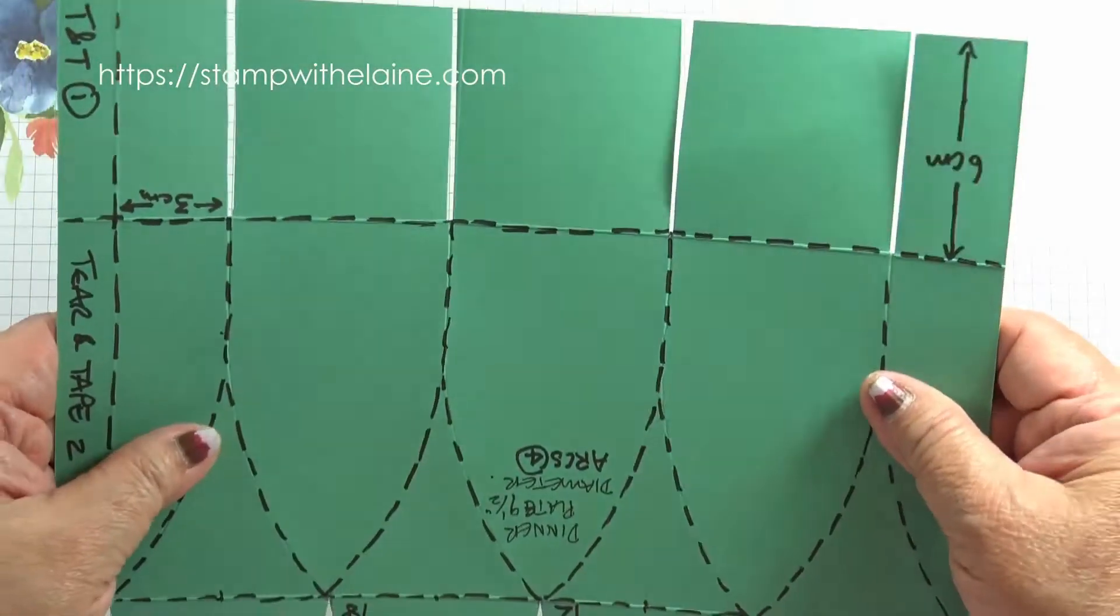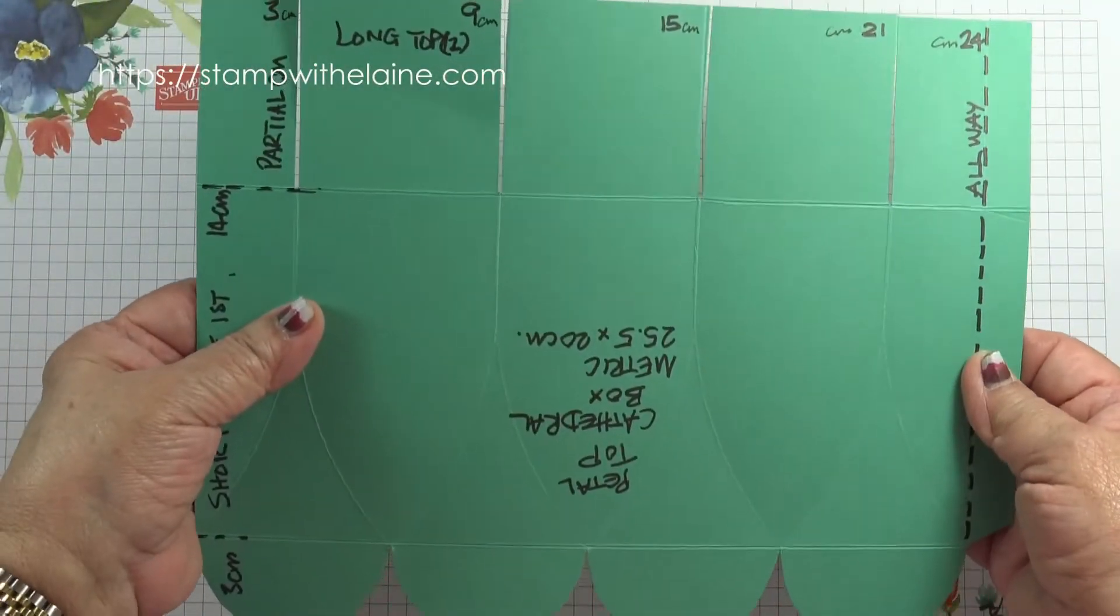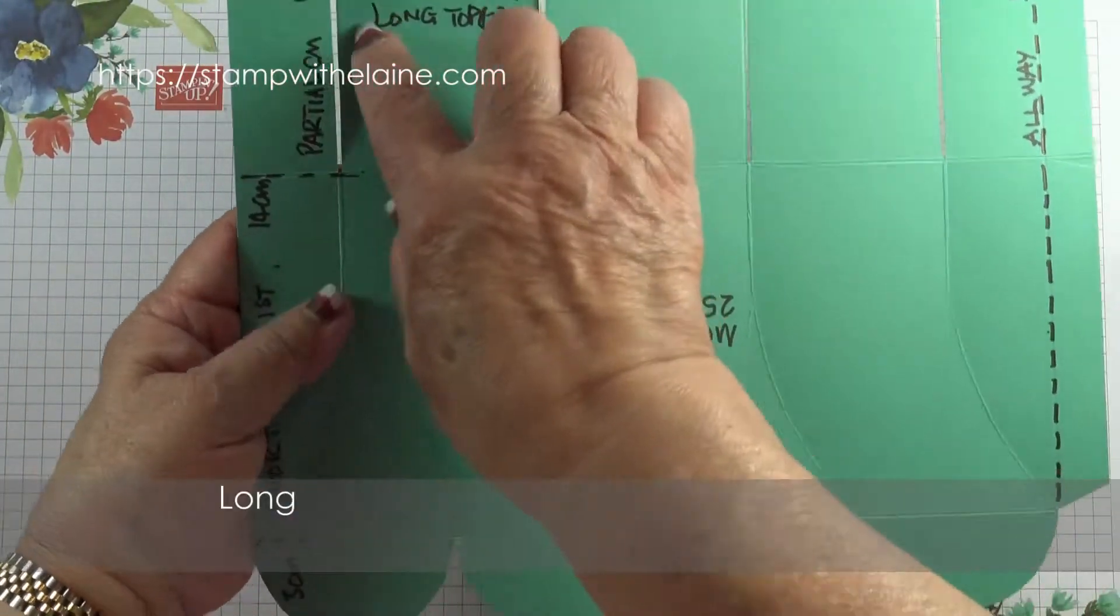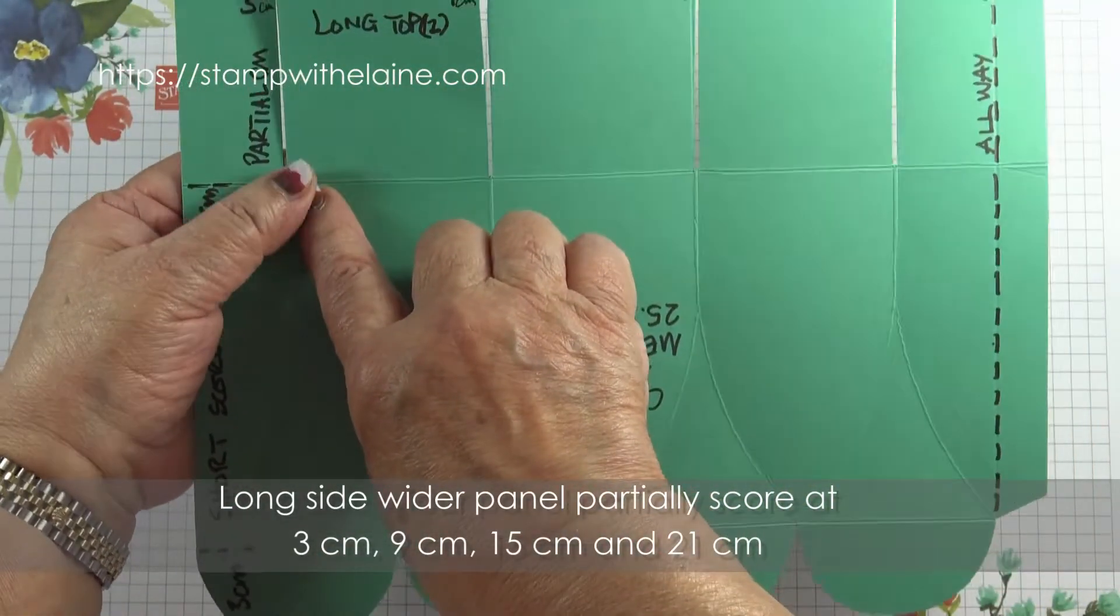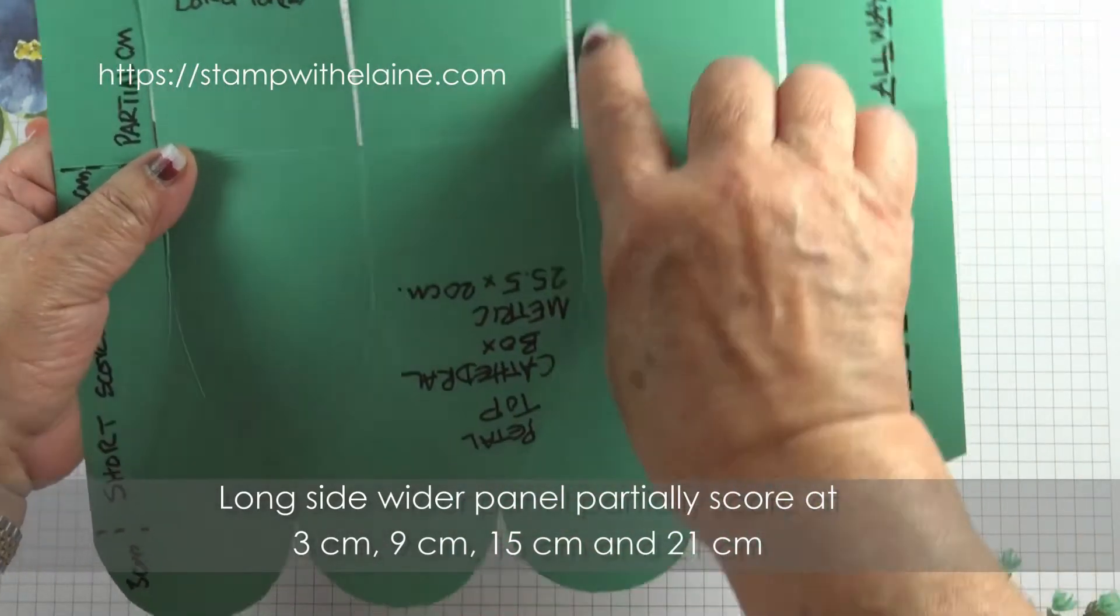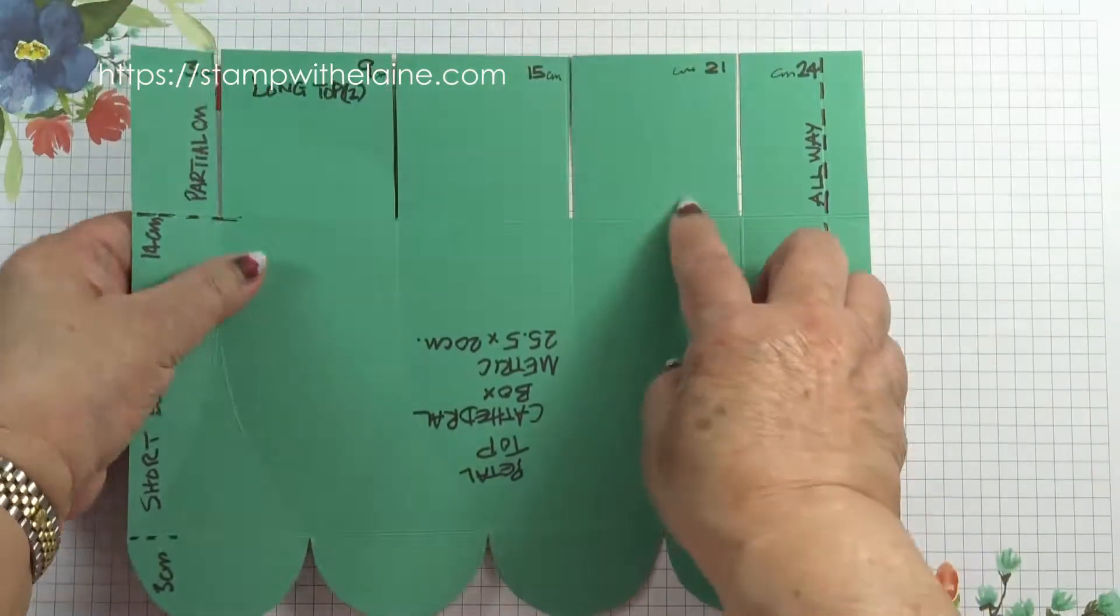Then orient your cardstock so that the long side is at the top, and your first score line will be partially scored to this score line here. And it's at three centimeters, nine centimeters, 15 centimeters, 21 centimeters. Partially scored.